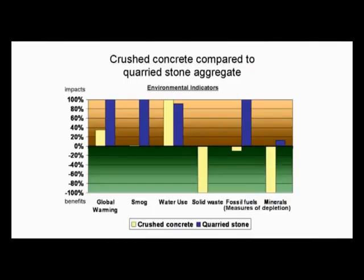A very similar process review was undertaken for quarried stone aggregate, so a comparison could be drawn. When you look at all over the life cycle and you add up all of these impacts, how does crushed concrete aggregate stack up? To find out, we undertook an LCA study of crushed concrete aggregate and quarried stone aggregate, then compared the environmental impacts of each per ton of product produced.